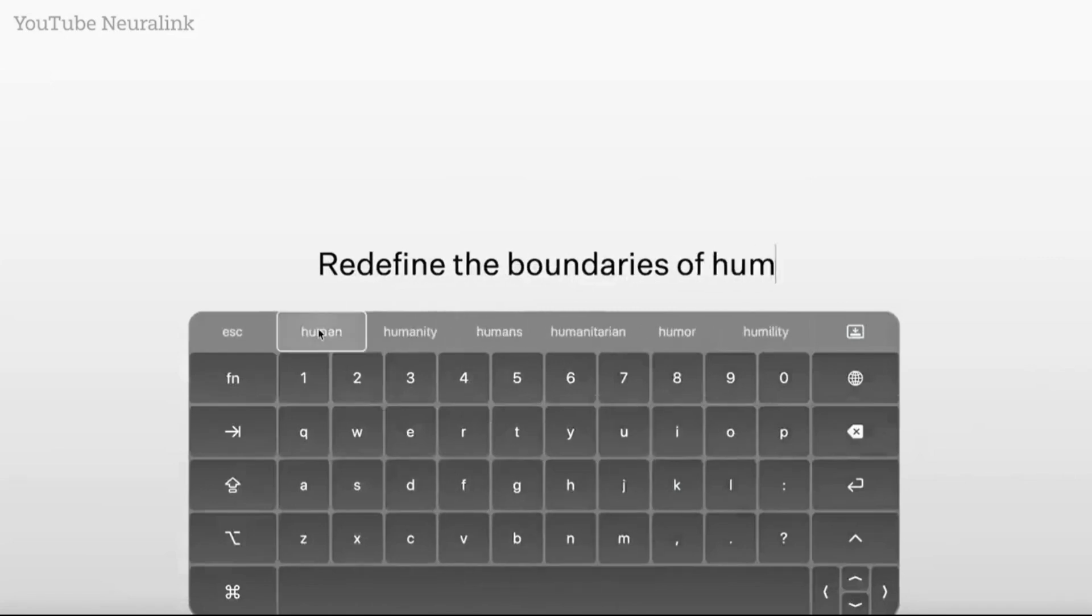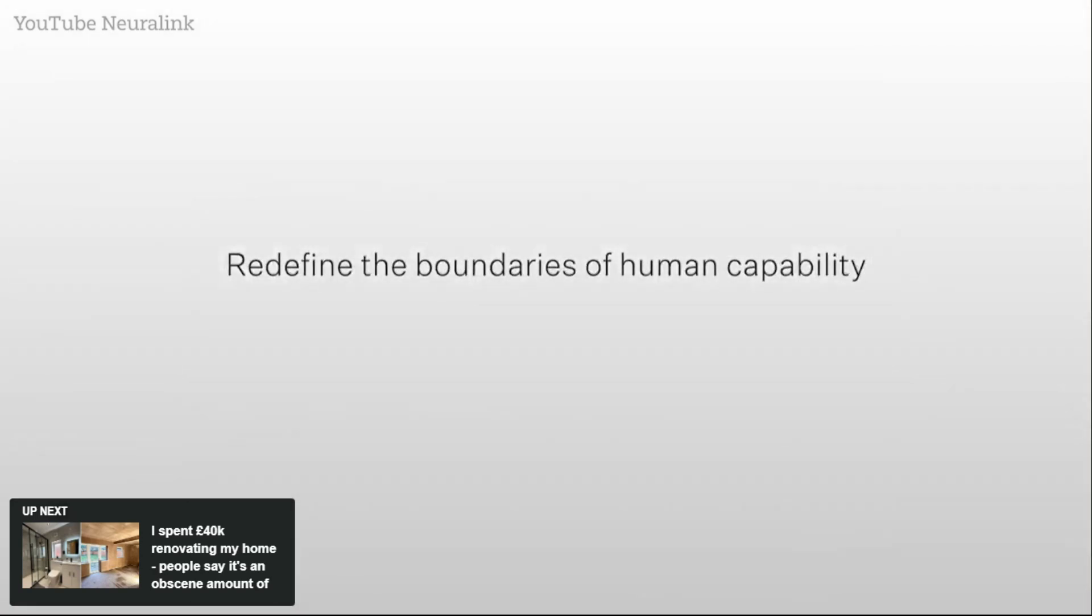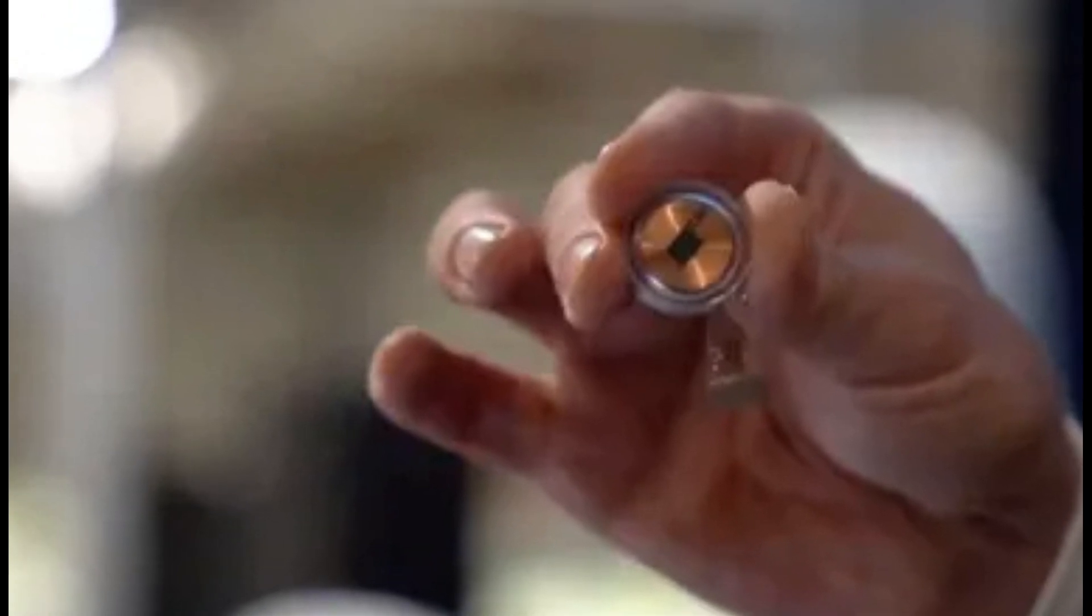By participating in the PRIME study, you'd be helping to redefine the boundaries of human capability. Let's delve deeper into the brain game and explore the potential, challenges, and ethical considerations surrounding this groundbreaking technology. While Musk frames Neuralink's purpose as safeguarding humanity from the potential pitfalls of artificial intelligence, the chip's potential extends far beyond mere survival.